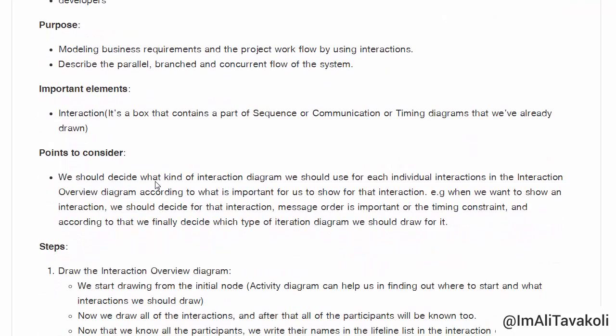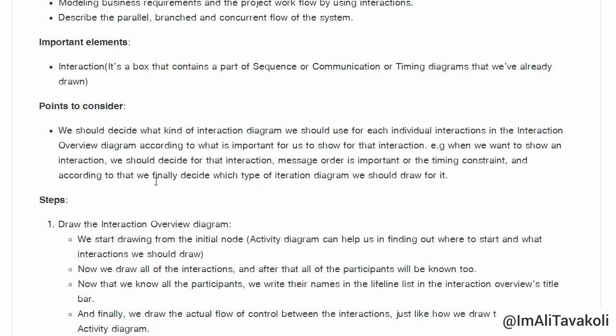Points to consider. We should decide what kind of Interaction Diagram we should use for each individual interaction in the Interaction Overview Diagram. According to what is important for us to show for that interaction. For example, when we want to show an Interaction, we should decide for that Interaction, Message order is important, or the Timing Constraint. And according to that, we finally decide which type of Interaction Diagram we should draw for it.